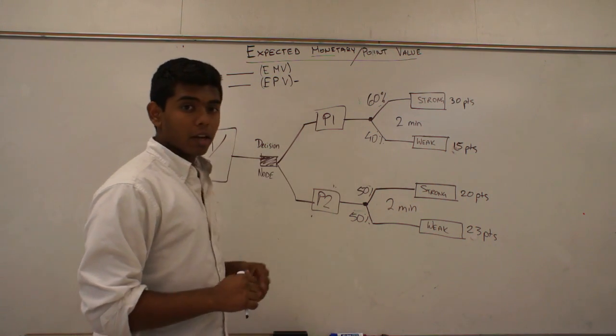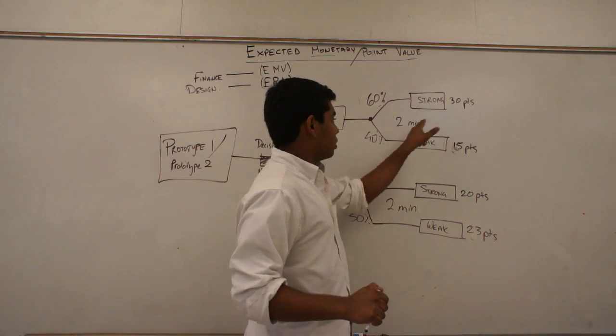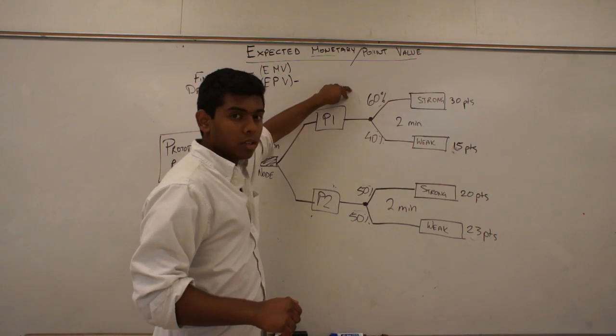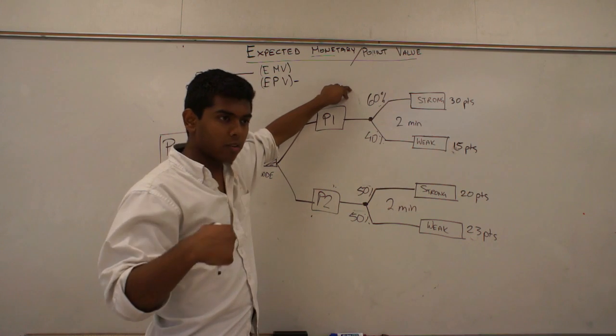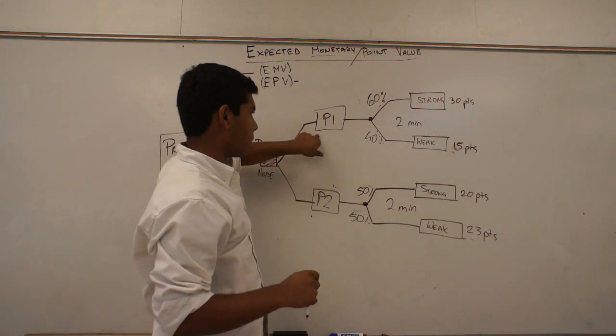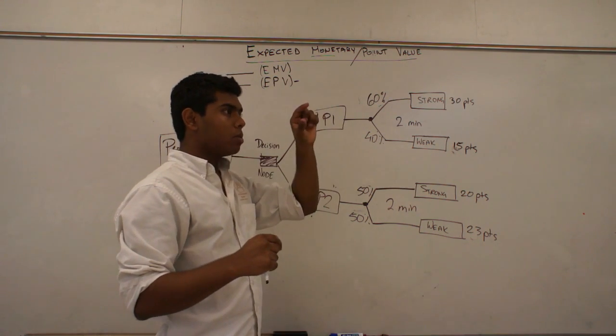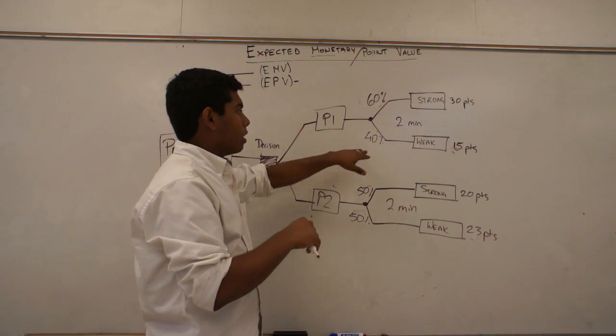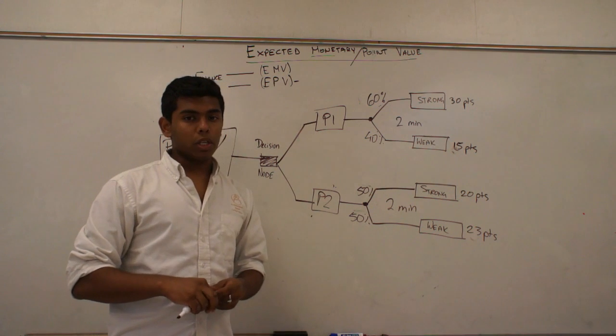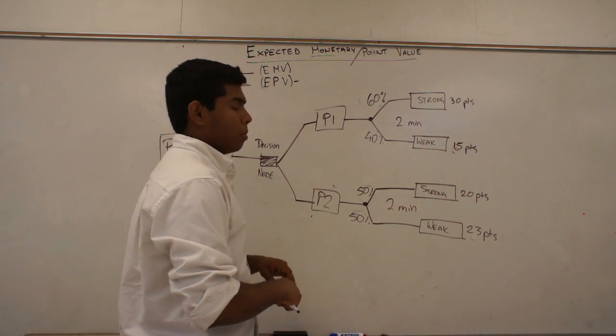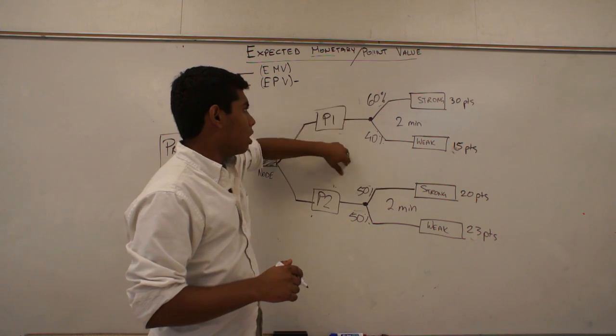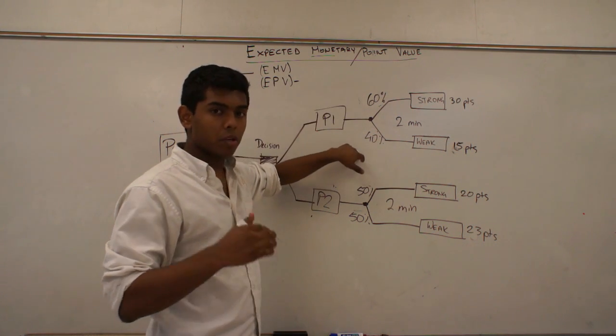Well, I also know that it can make 30 points in two minutes, but the chances of that happening is 60% based on the number of tests I've done. So let's say I've done 10 tests with prototype one, six of the times it's gotten 30 points, whereas four of the times it's gotten only 15 points. So based on those tests, I can create a ratio of 60 to 40.